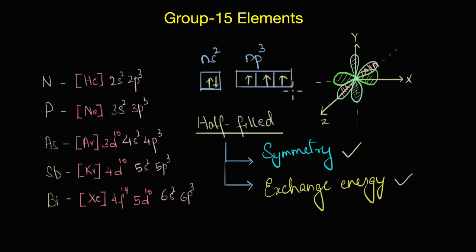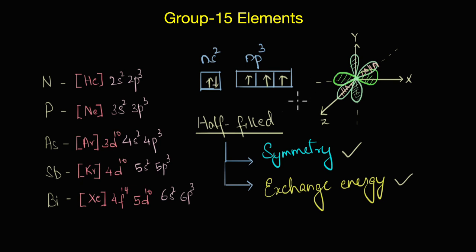The second factor contributing to stability is exchange energy. When the orbitals are half-filled, they all have the same spin in degenerate orbitals — orbitals that have the same energy. Although the three p orbitals orient themselves along three different axes, they all have the same energy, which is why px, py, and pz orbitals are called degenerate orbitals.